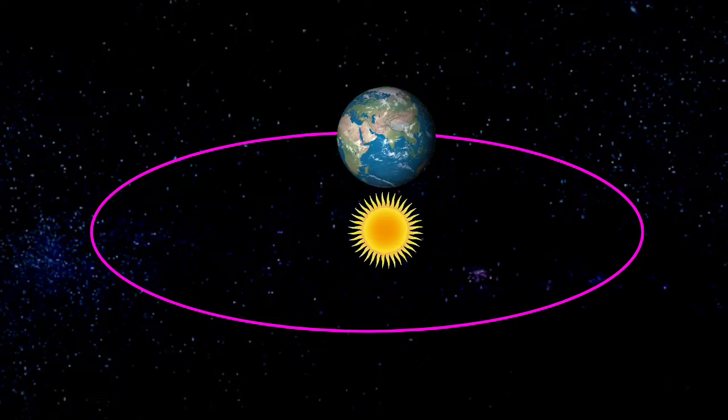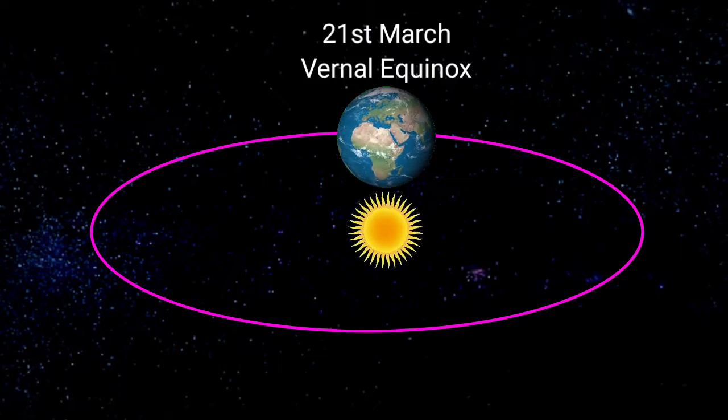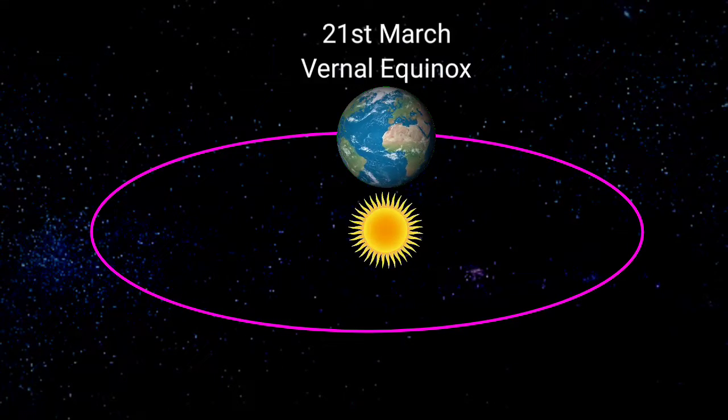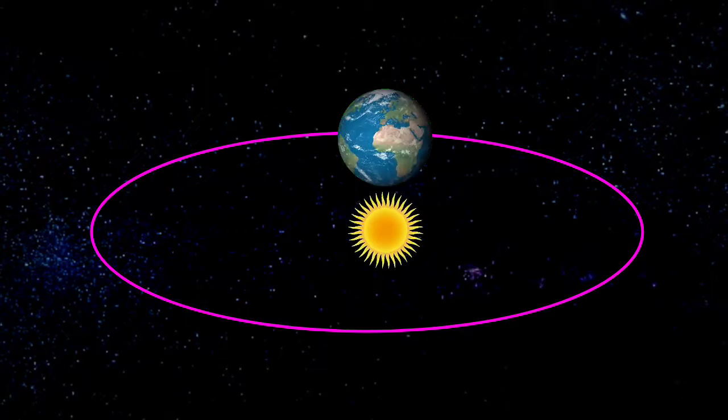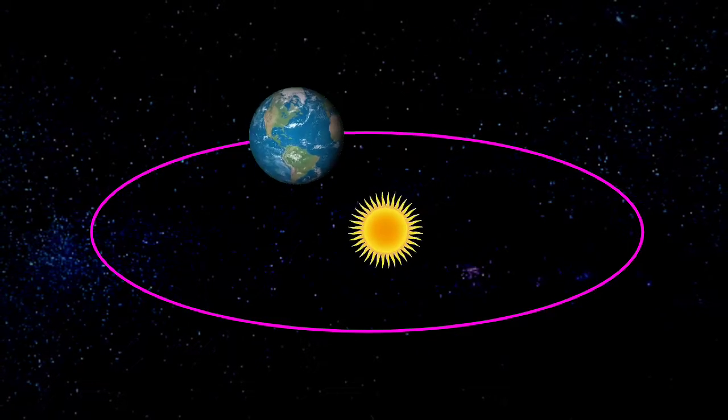On around 20th or 21st March, the length of the day and night becomes equal. And it is known as vernal equinox. And on the other hand,